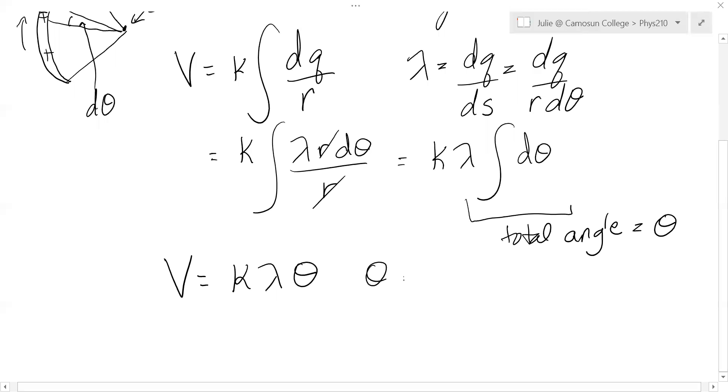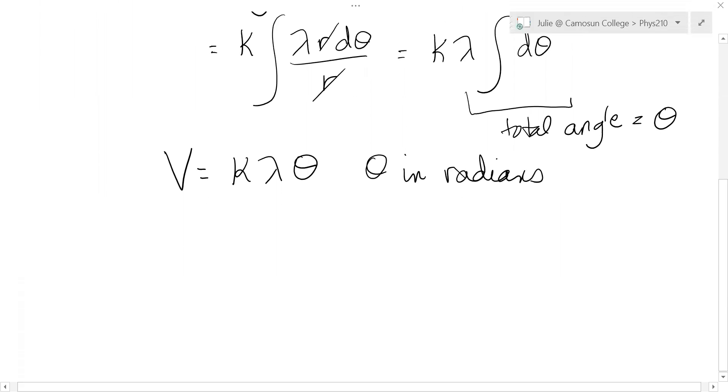Now, you got to be real careful—theta has to be in radians. You can't put degrees into that formula. So if you happen to have a semicircle of radius r, well, then theta would be pi, and so V would just be k lambda pi.